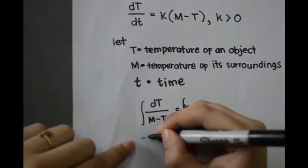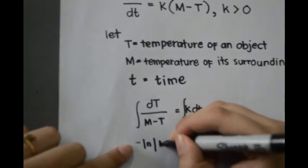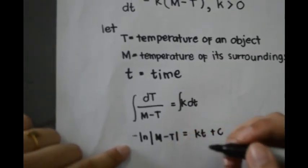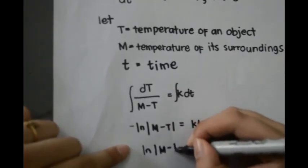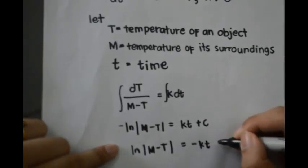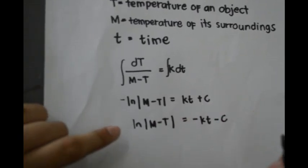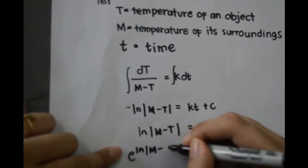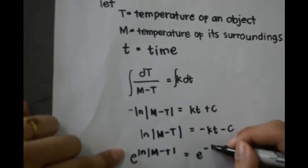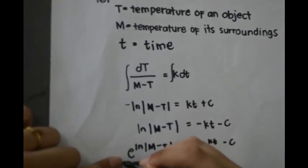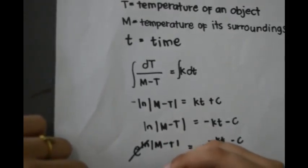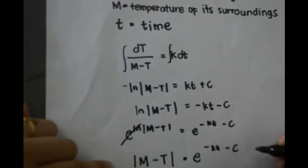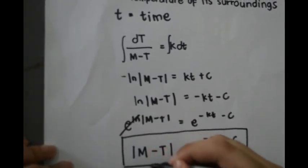After integrating, the answer will be ln of (M minus T) equals kt plus c. Simplifying further, ln of (M minus T) equals negative k times t minus c, and then by exponentiation, M minus T equals e raised to negative k times t minus c. This is our formula for Newton's Law of Cooling or Heating.